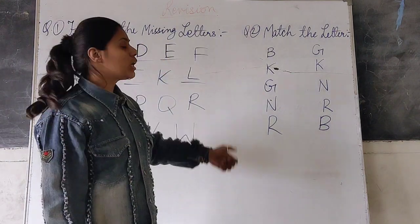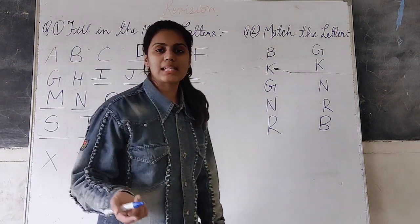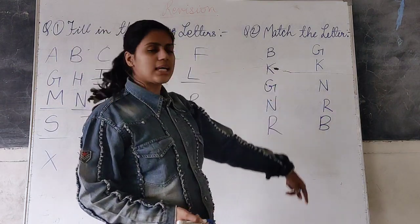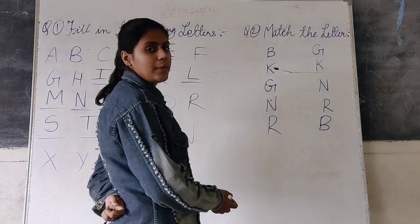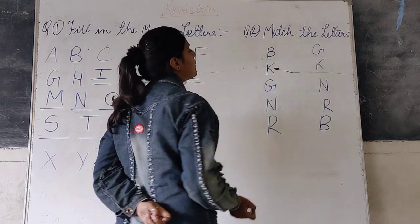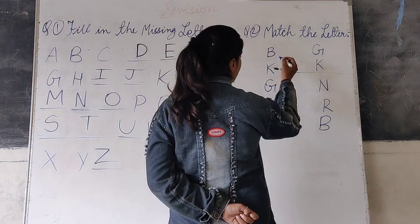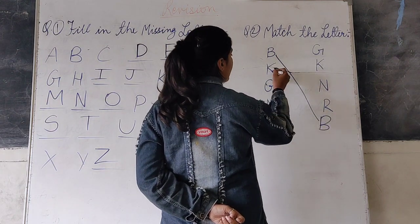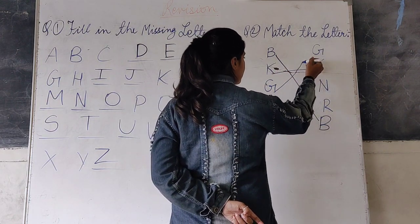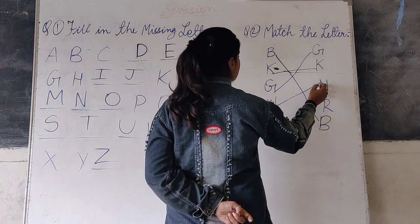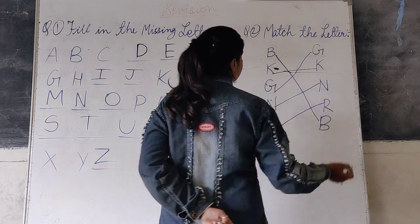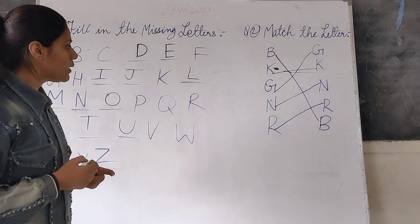Now, question number second is match the column. Okay? Now we have to match the column, same letters with each other. B, G, K, N, R. This is the match of my complete question.